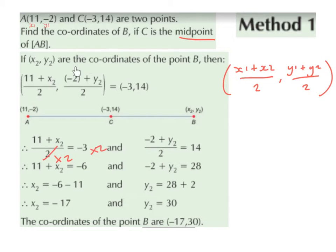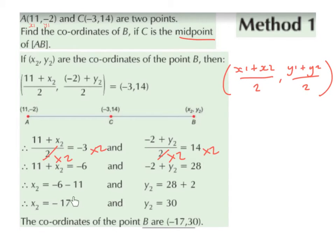Then we can say (minus 2 plus y2) divided by 2 equals 14. Multiplying both sides by 2, we get minus 2 plus y2 equals 28. Bringing minus 2 over gives plus 2, so 28 plus 2 is 30. So y2 equals 30. Therefore x2 is minus 17 and y2 is 30, so the coordinates of point B are (-17, 30).